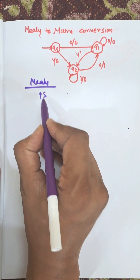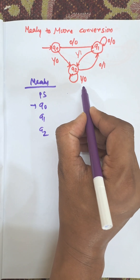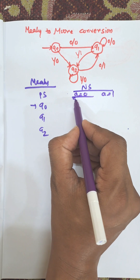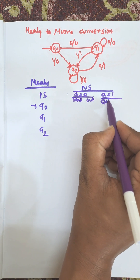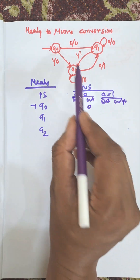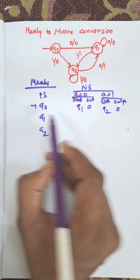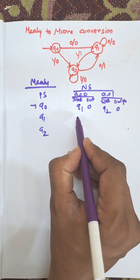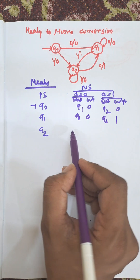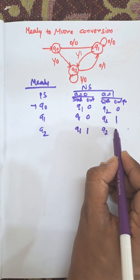Here q0 is the present state — q0 initial — q1 and q2 are the three present states. There is a next state for a equal to 0 or a equal to 1, and there is a state and output. From q0 with input 0, next state is q1 and output is 0. From q0 with input 1, next state is q2 and output is 0. From q1 with input 0, next state is q1 and output is 0. From q1 with input 1, next state is q2 and output is 1. From q2 with input 0, next state is q1 and output is 1. From q2 with input 1, next state is q2 and output is 0.